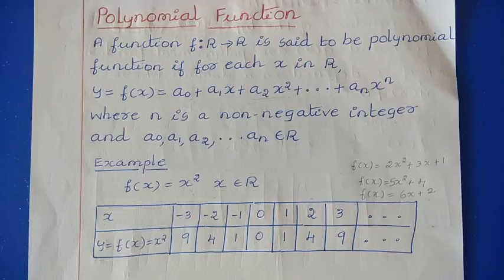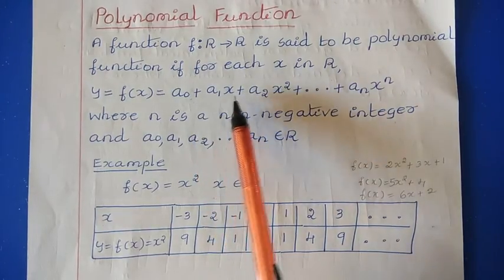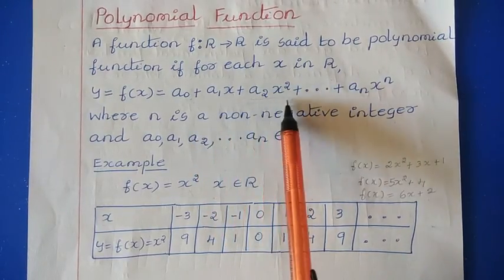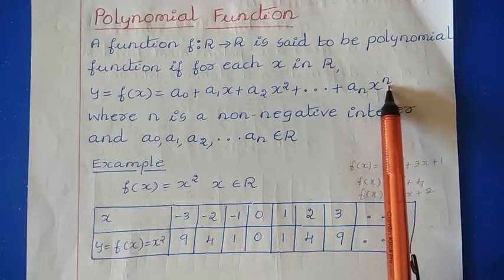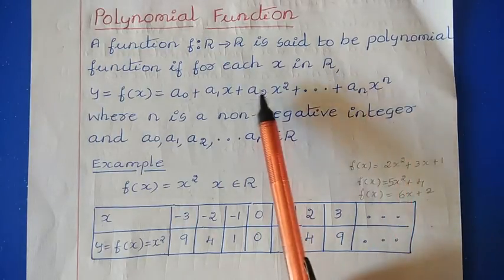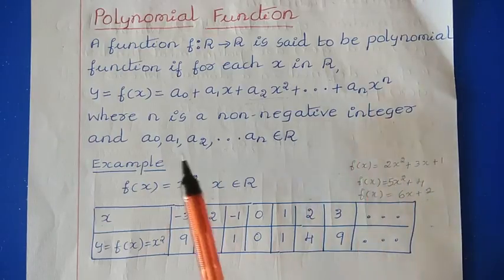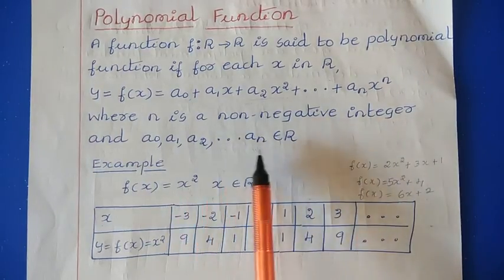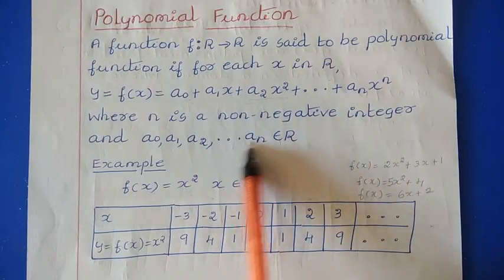A polynomial function is a function which is mapped from real number to a real number. It is in the form a0 plus a1x plus a2x squared plus anx to the power n, where n is a non-negative integer. The value of n is 0, 1, 2, 3 and so on. And a0, a1, a2, an — all these are real numbers, belonging to the real number set.